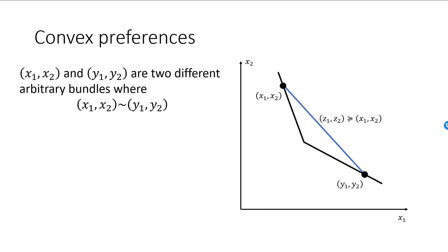At the middle of the blue line, for example, we have a bundle consisting of 50% of the X bundle and 50% of the Y bundle. The way I have drawn this picture, any bundle on the blue line is weakly preferred to any bundle on the indifference curve. Our X bundle and Y bundle are on the blue line but also on the indifference curve. All other bundles on the blue line are to the right and above the indifference curve, and they are therefore, due to strict monotonicity, strictly preferred to any bundle on the indifference curve.